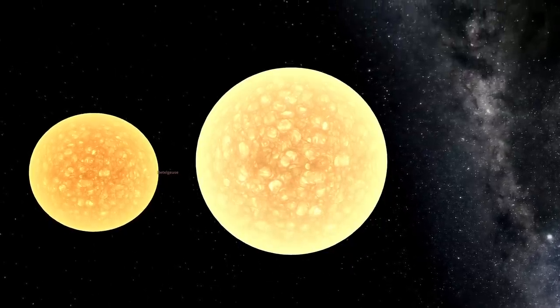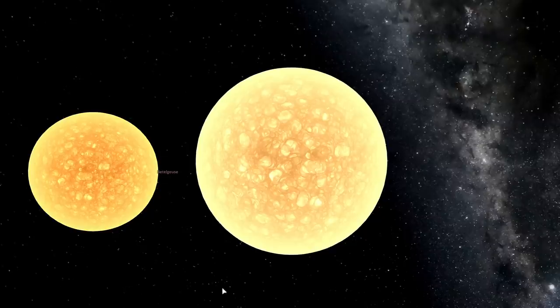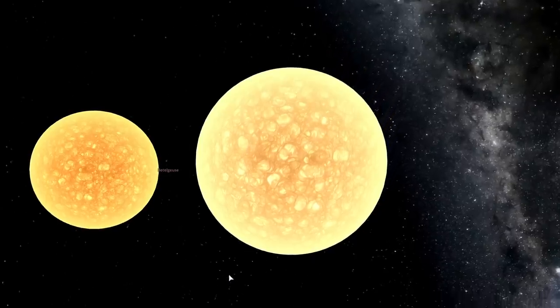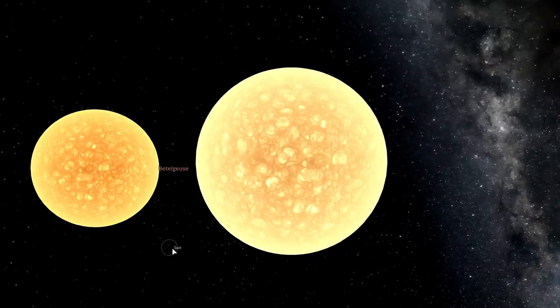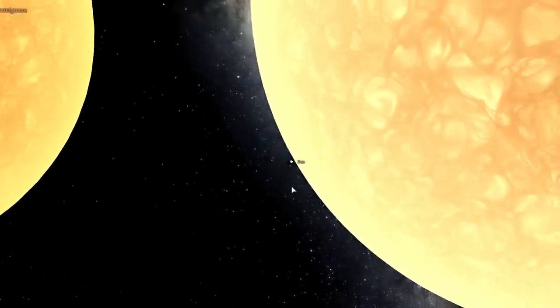First of all let's start with a bit of a comparison and a little bit more about this star itself. This is how Betelgeuse compares to V.Y. Canis Majoris and if we were to place the sun here, it would be barely visible, it would be this really really tiny pixel-like formation right between these two stars.